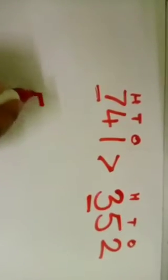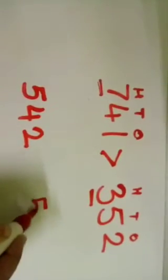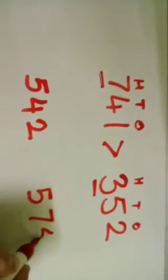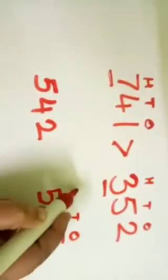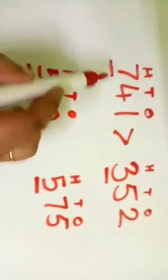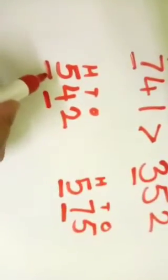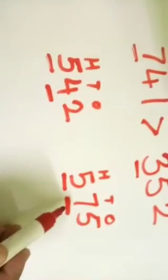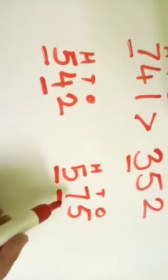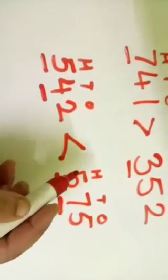The second example is 542 and 575. Here also, we will put 1s, 10s and 100 on both numbers. The first rule: compare the 100 ones. Here the 100s are same, so we move to the second rule — compare the 10s. Here 4 and 7 are in the 10s place. 7 is greater than 4, so 575 is greater. Put the crocodile mouth open here.